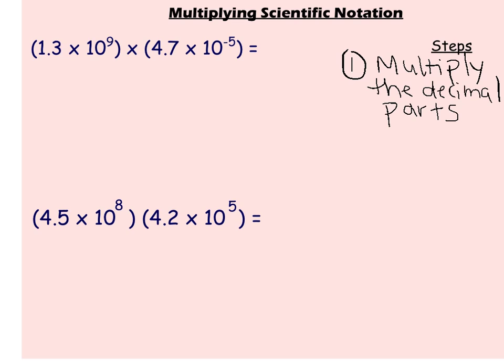I know because of the associative property and the commutative property of multiplication that I can take 1 and 3 tenths times 4 and 7 tenths, because I can multiply in any order and group them however I want. So when I take 1.3 times 4.7, I end up with 6 and 11 hundredths.